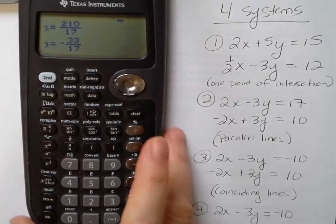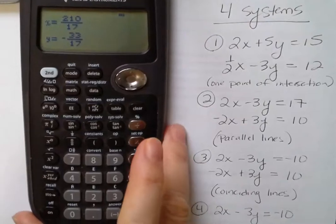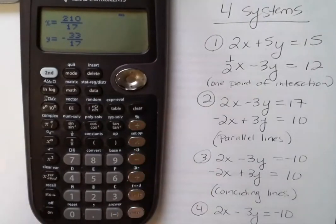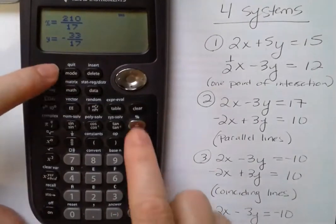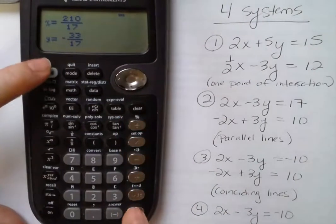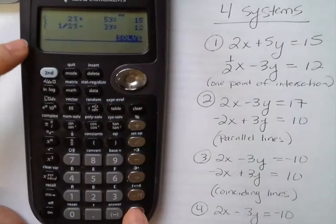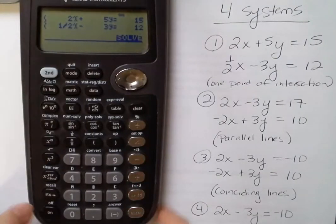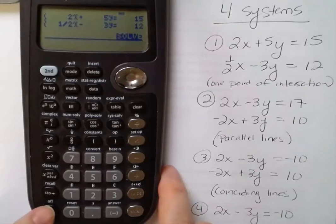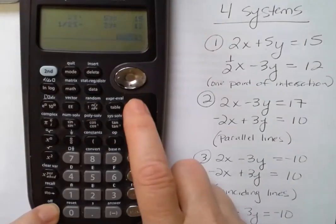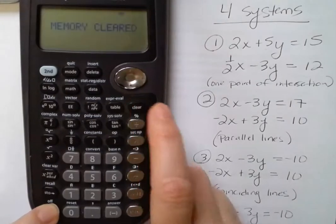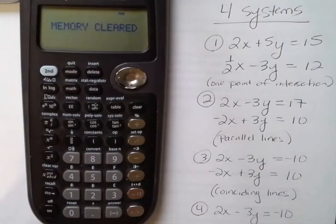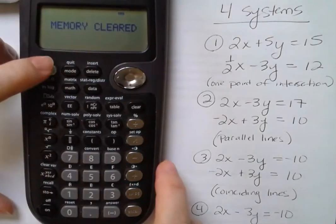Those values that I just put in will be saved if I don't clear it. So if I go back in right now and hit enter, it would show me those values. How you can clear those really quickly is to push your ON button and hit clear a couple of times — that's going to clear out your memory. You can start fresh.